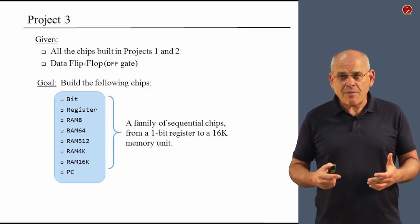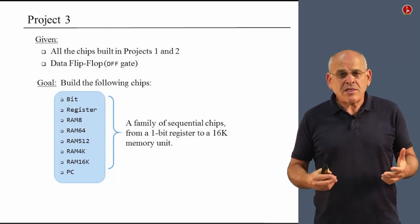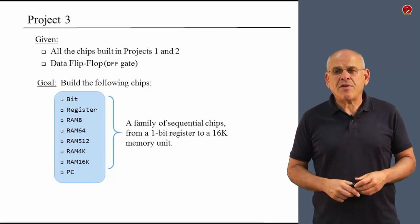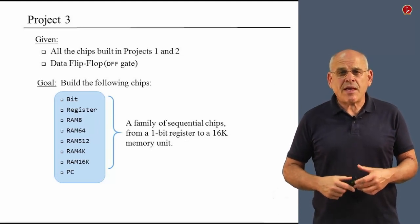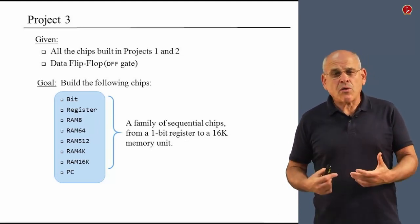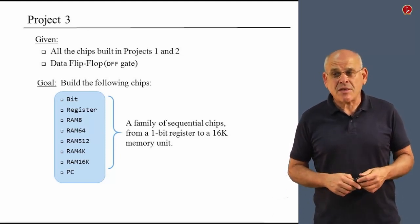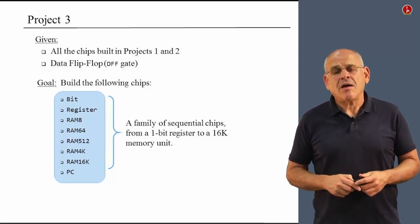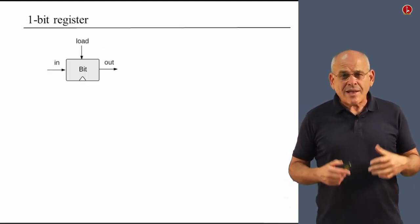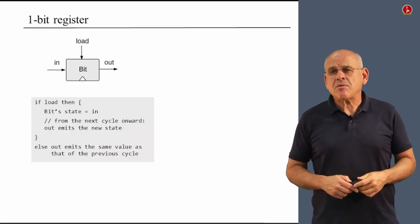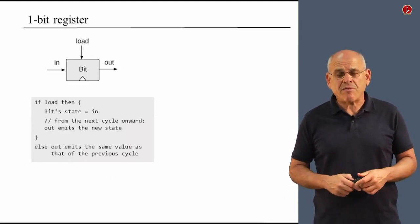Most of these chips, all of them except for the program counter, constitute a family of increasingly complicated sequential chips, beginning from one bit register all the way to a RAM device that contains more or less 16,000 registers, 16K registers. So let us begin with the one bit register, whose diagram and documentation is repeated here.